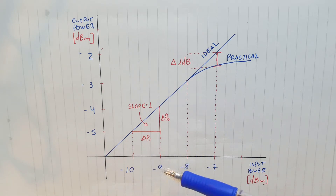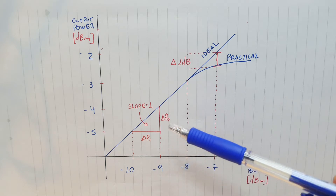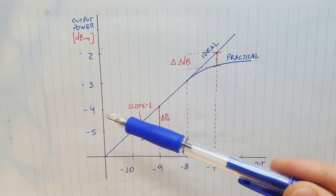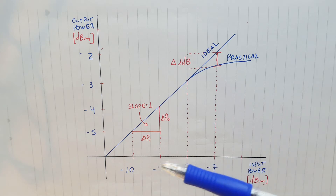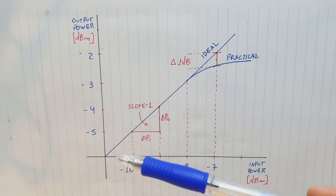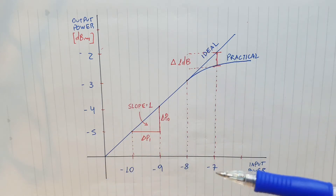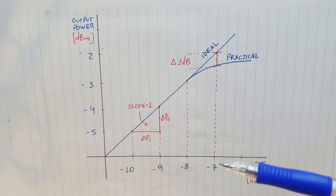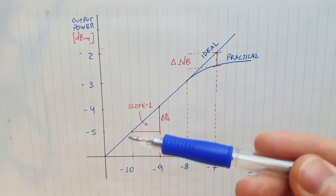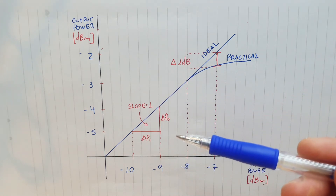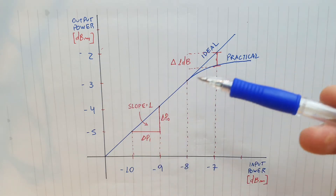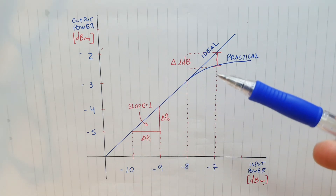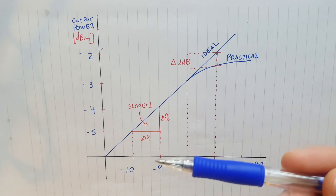With -9dB of input power we have -4dB of output power, so as this scale is logarithmic we get a slope of 1. One thing to keep in mind is that a radio frequency amplifier is modeled by small signal behavior — this ideal amplifier behavior is from a linearized, small signal point of view.